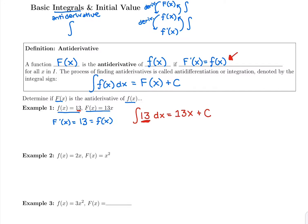Let's do that again. We want to see: is the antiderivative of 2X equal to X squared? Determine if capital F is really the antiderivative of lowercase f. The derivative of X squared is 2X, which gets us back to lowercase f of X — same as what we just checked above. Check by taking the derivative of the antiderivative; it should get you back to the original function.